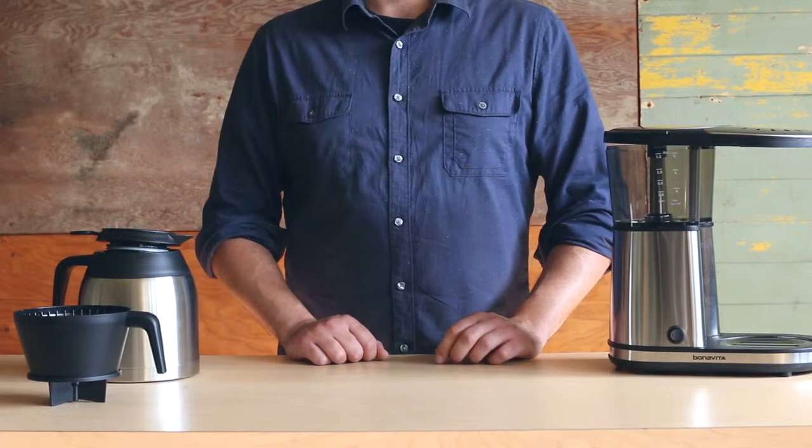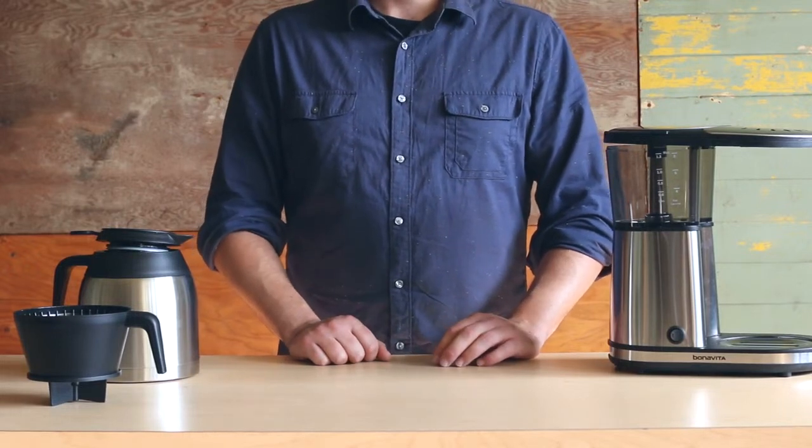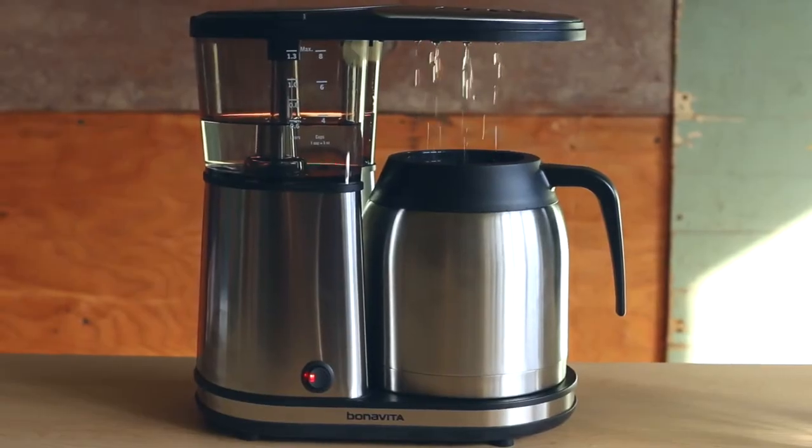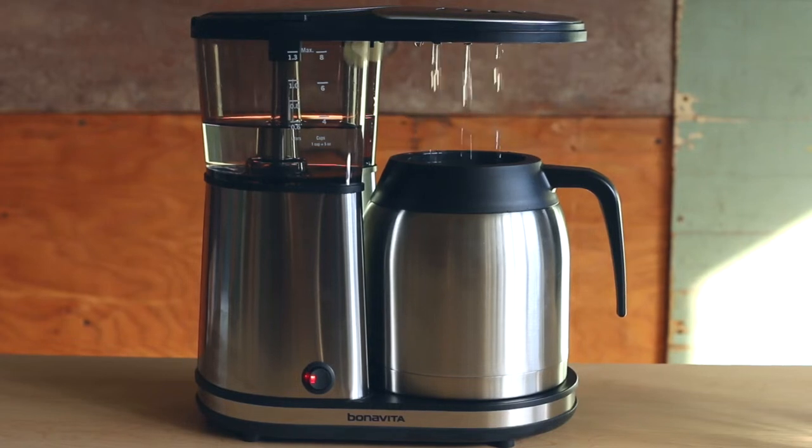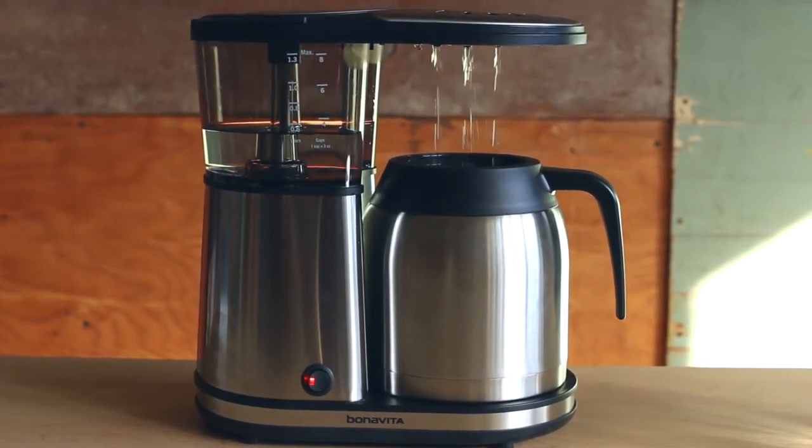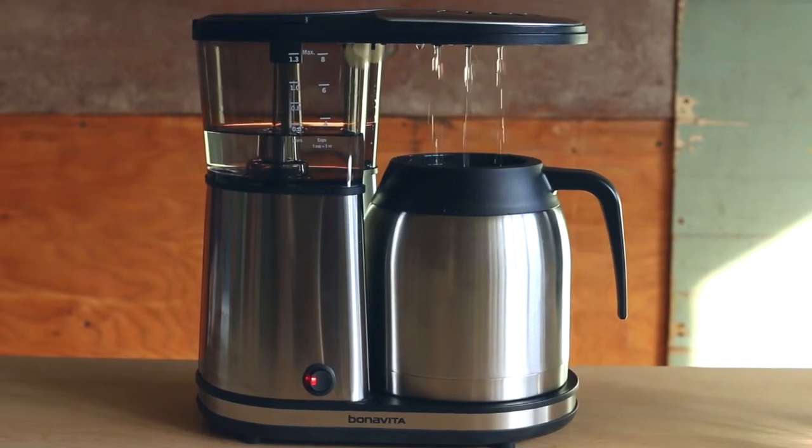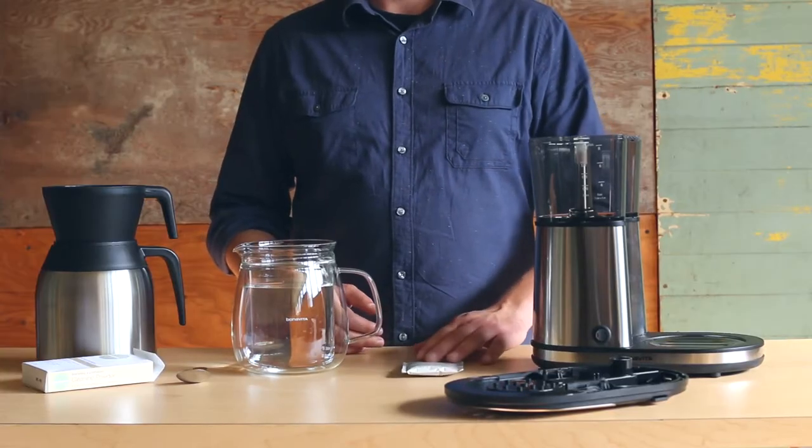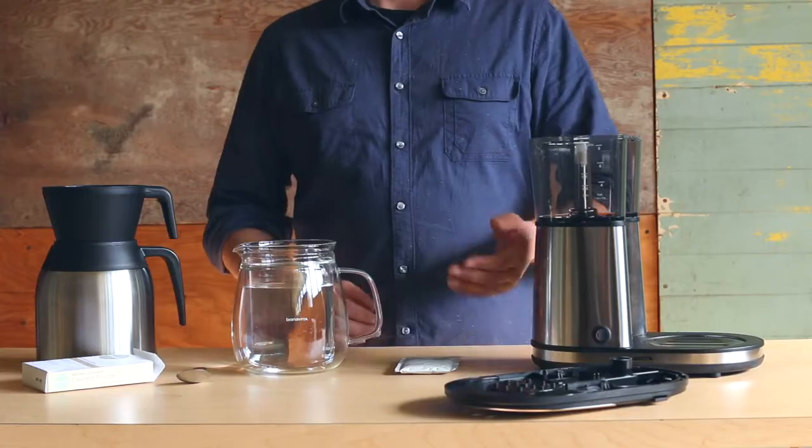After cleaning the shower head, it is recommended that you descale your brewer. Descaling removes buildup, which can cause the brewer to brew slowly or stop brewing altogether. We recommend descaling at least once every 100 uses, though you may need to descale more frequently if you have hard water.